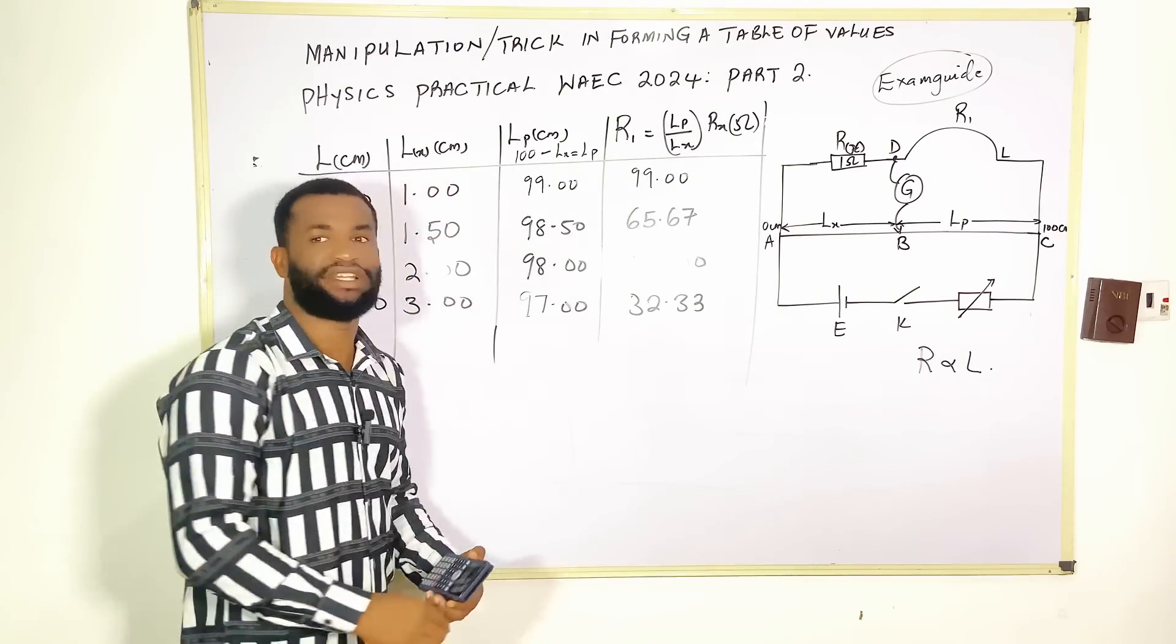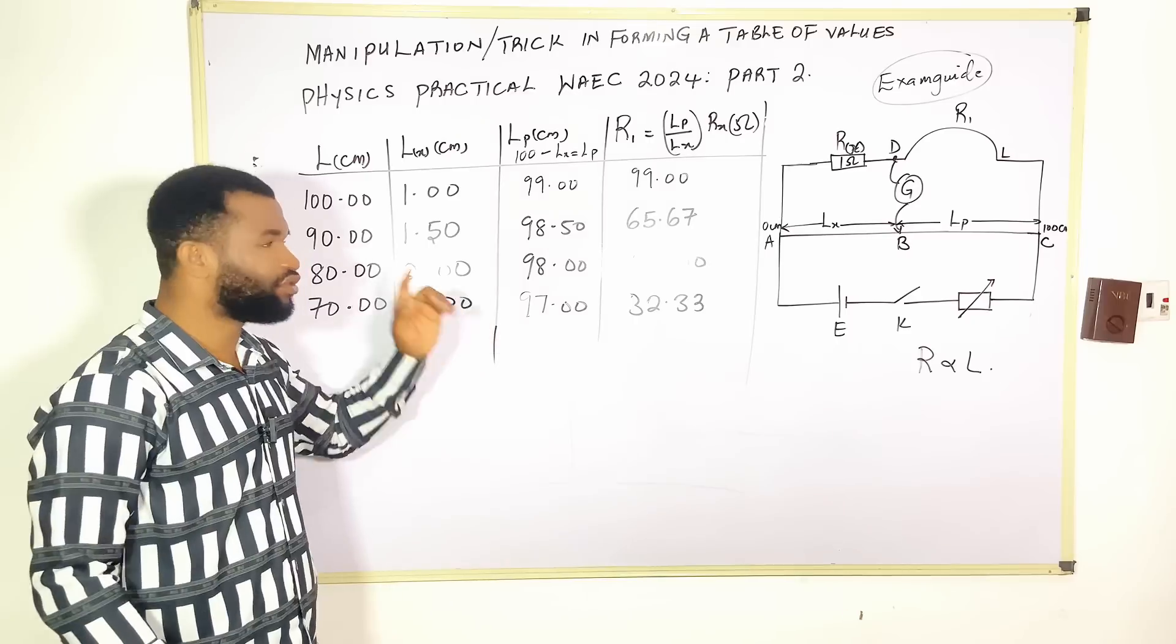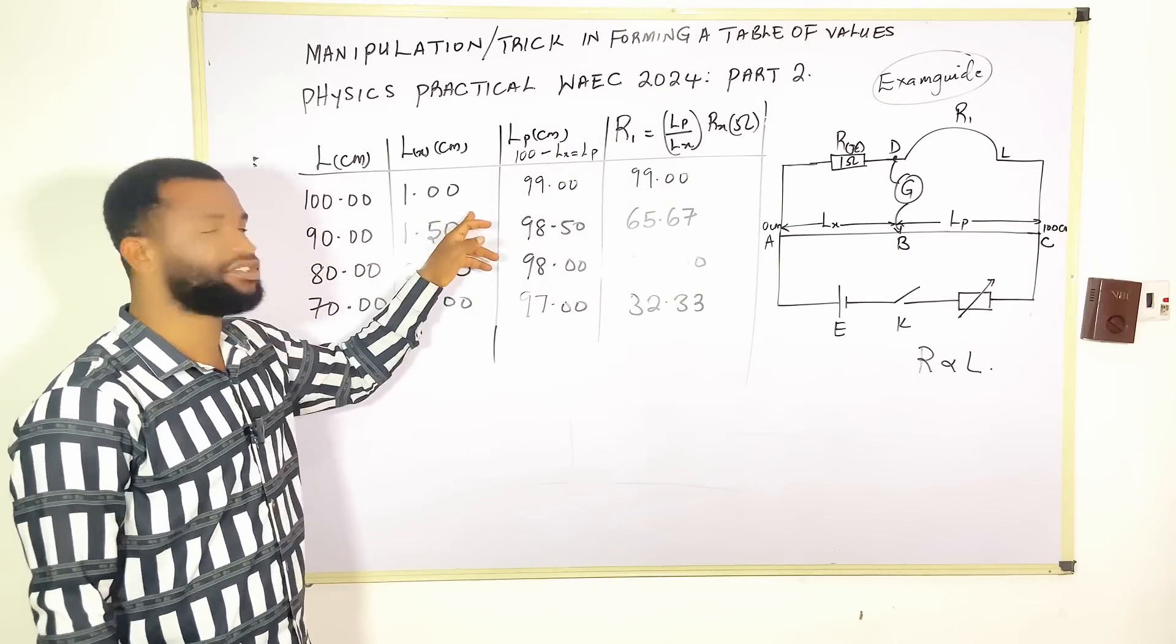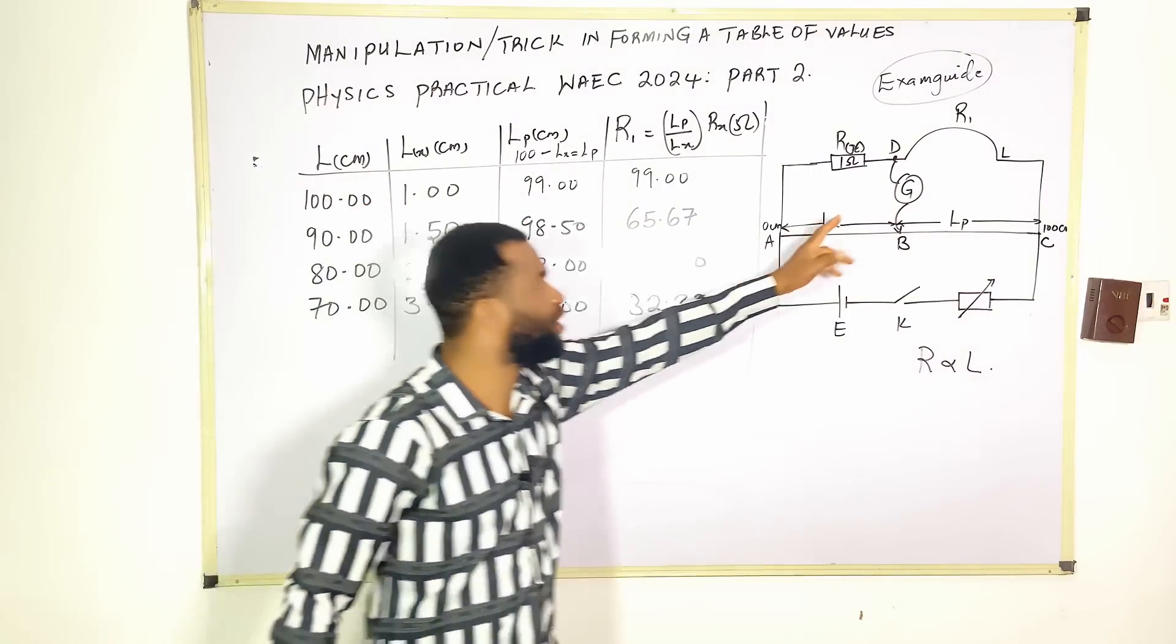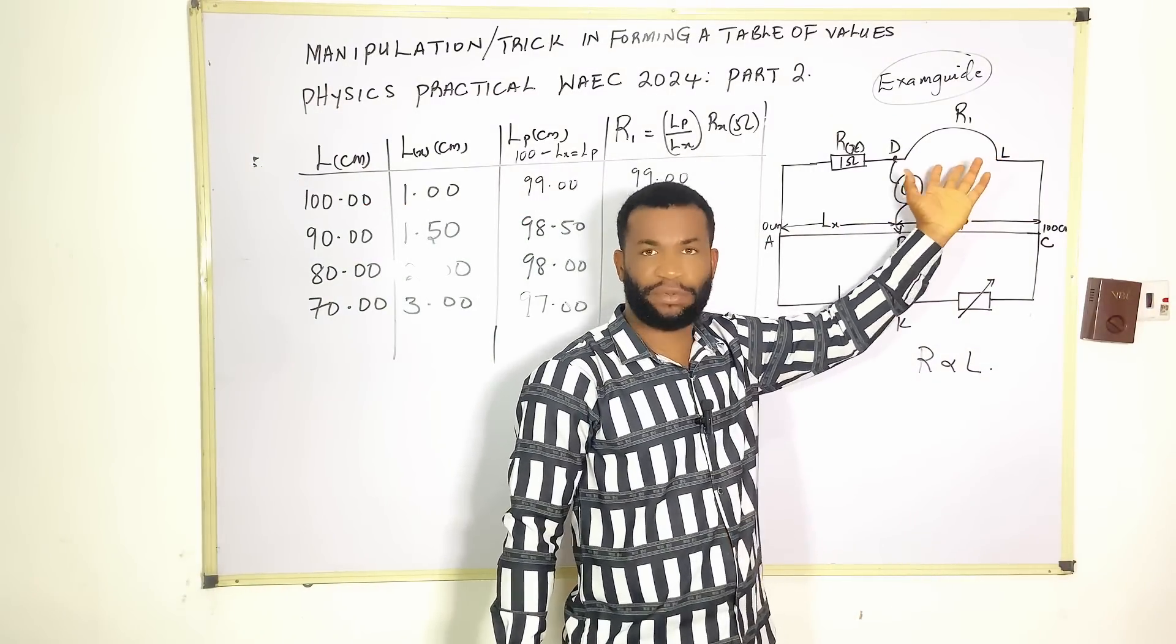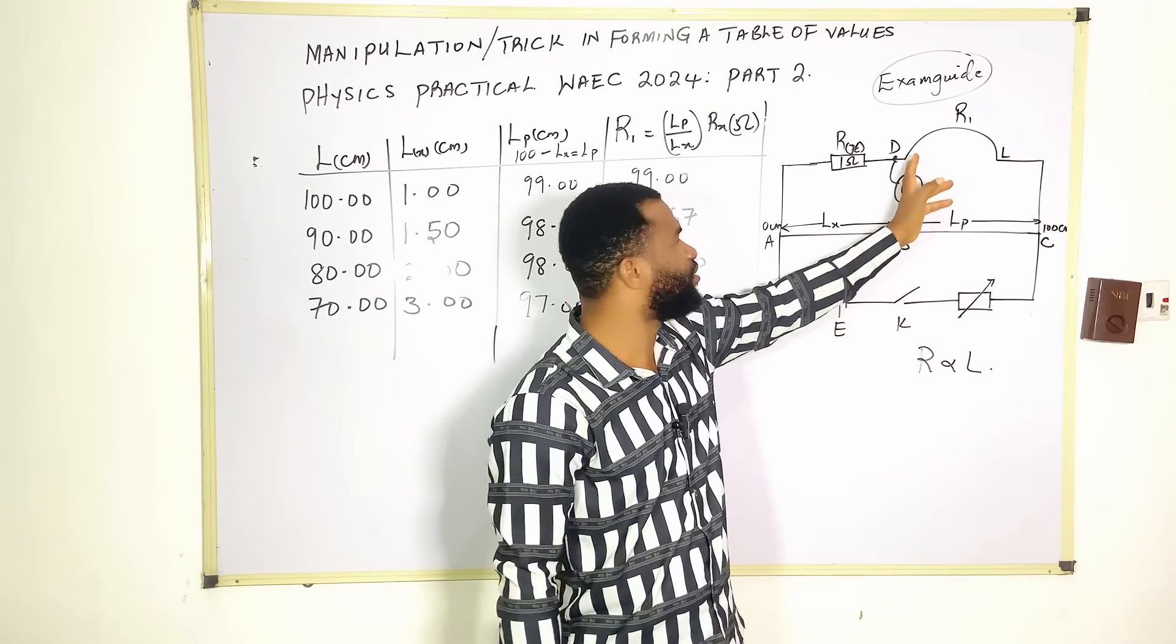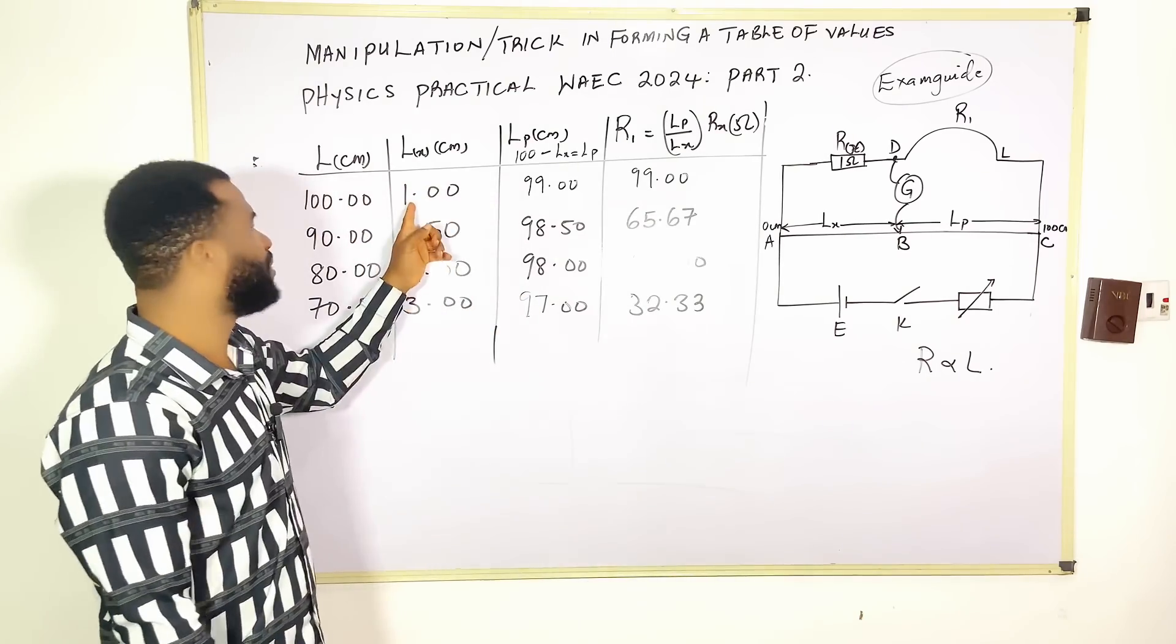Another issue is this: when you are doing your R2, you must at least perform the first experiment to know your balance point. Remember, my balance point here is 1. The kind of wire you are putting here—maybe some people may use a silver wire, some people may use a copper wire, some people may use constantan—the kind of wire you put here is what is going to determine your first balance point.